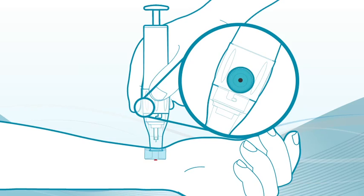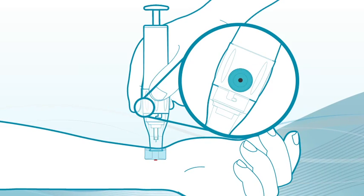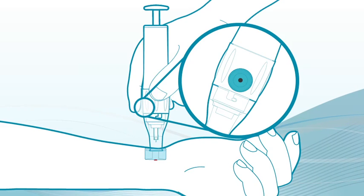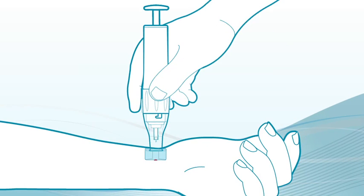It's very important you hold your finger tightly over the hole in the center of the activation button. If you lift your finger off this hole, the blood-drawing vacuum will be lost and you may have to start the process over.